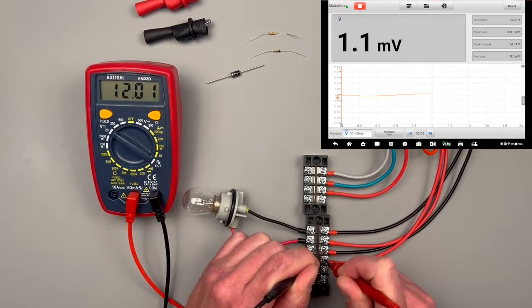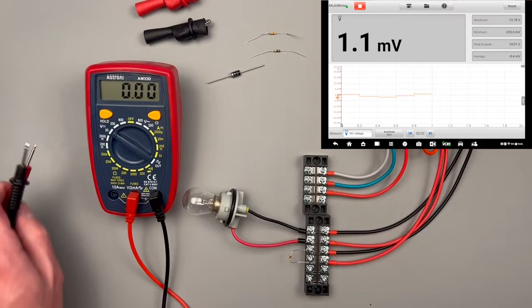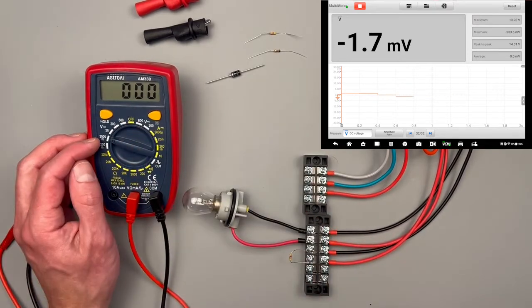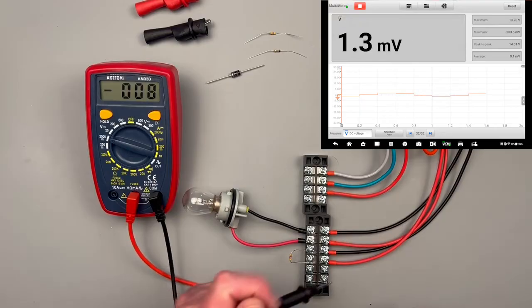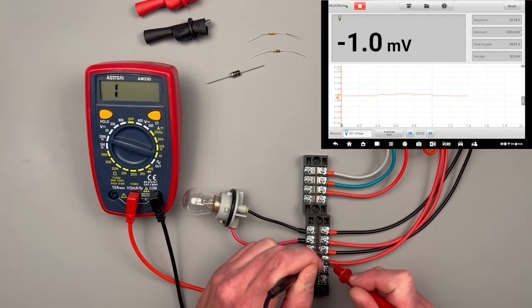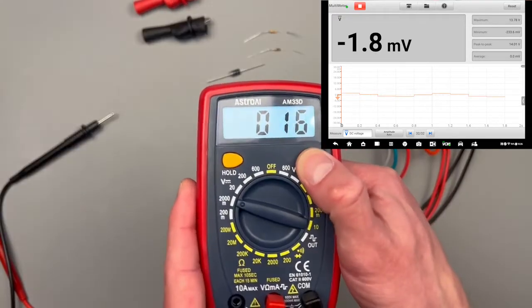And then for this 2000 millivolt and 200 millivolt, it'll display a one because this will be out of range for the meter. Meter comes with the backlight, and the hold button is just to hold your reading so that if you make a reading you'll press hold and then that'll save the reading for you.